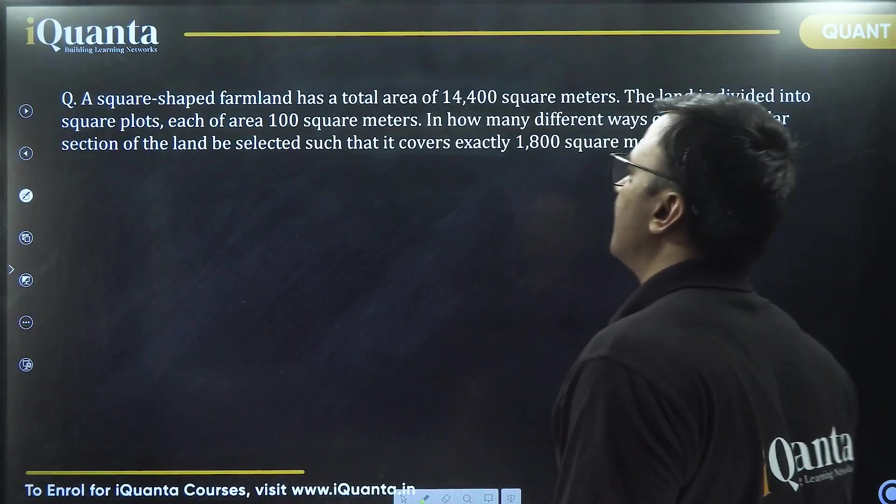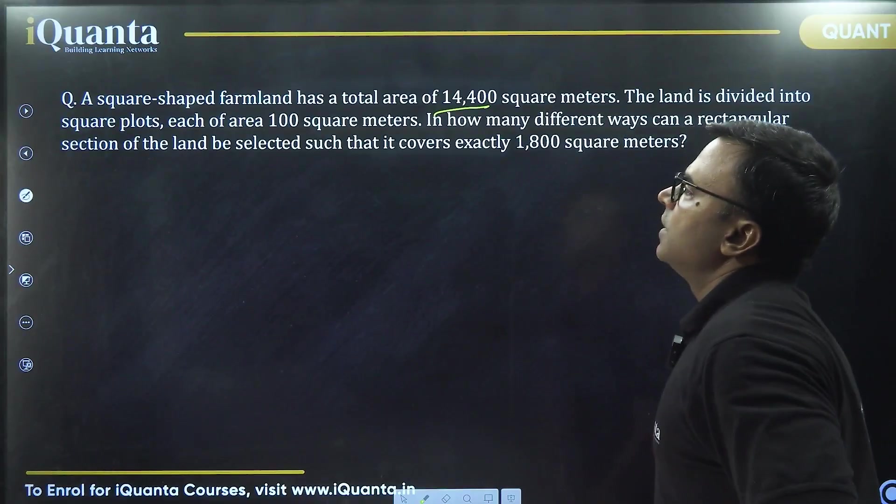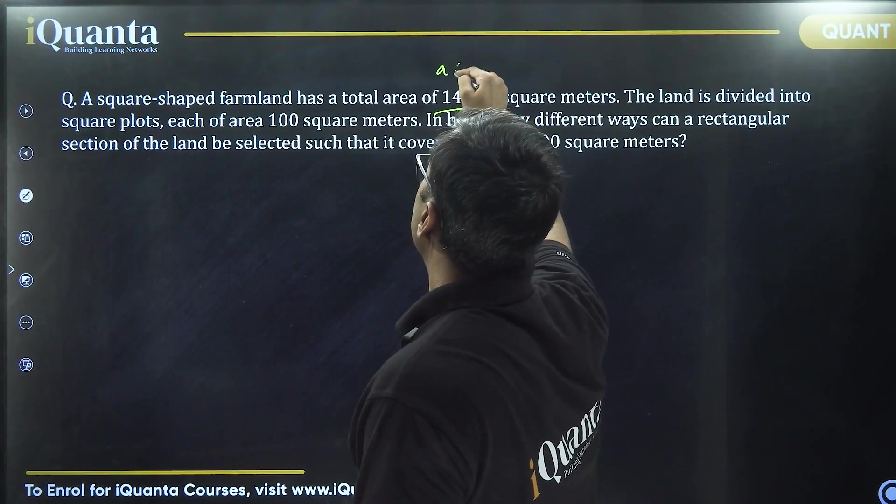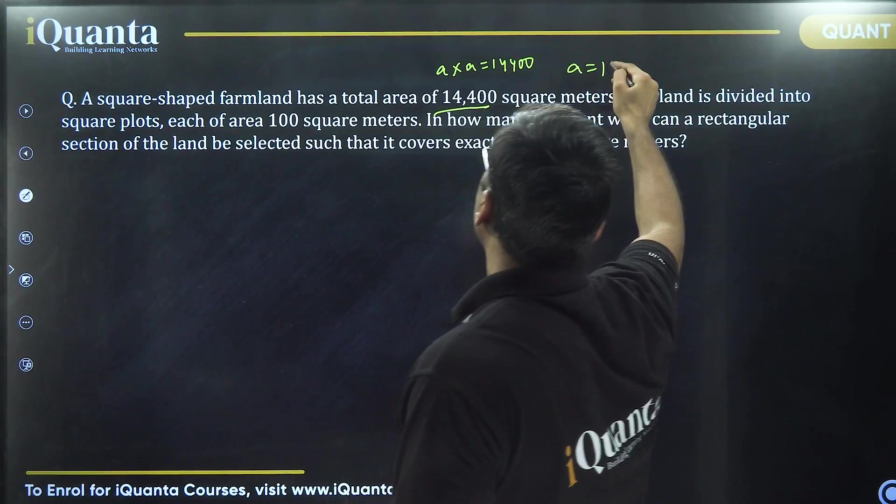Now this question says a square-shaped farmland has a total area of 14,400 square meters. It's a square plot. So if the side is A, then A into A should be 14,400. So A is equal to 120 meters.